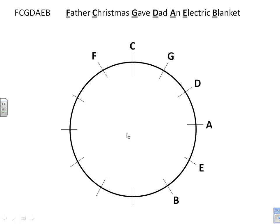Now, to fill in the other ones, we need a different set of letters. In this case, we need B, E, A, D, G, C, F. A good way to remember this is: blanket exploded and Dad got crispy feet. So B, E, A, D, G, C, F. It's a good way to do this.